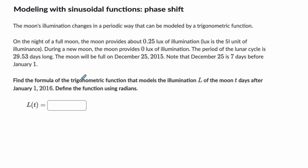Okay. So take a moment, read this problem, and then we'll solve it together. Okay. So the moon's illumination changes in a periodic way. Okay. That makes sense. On the night of a full moon, the moon provides this much lux of illumination. And then during a new moon, it provides less. And the period, so they give us the period. Here, I'm going to write this down. The period is 29.53 days. Okay. 29.53 days.